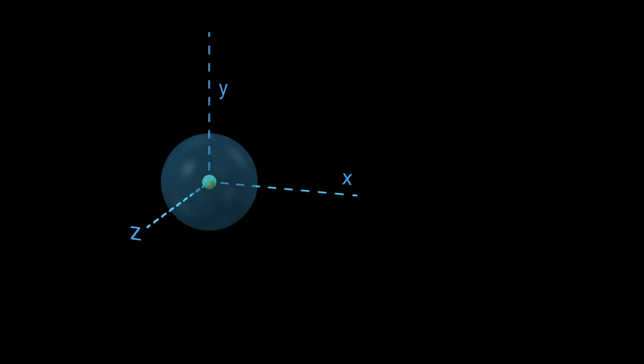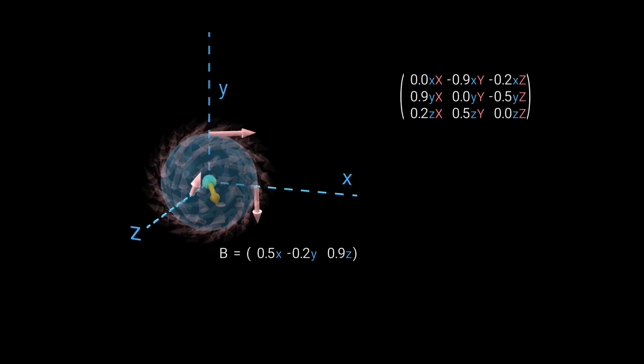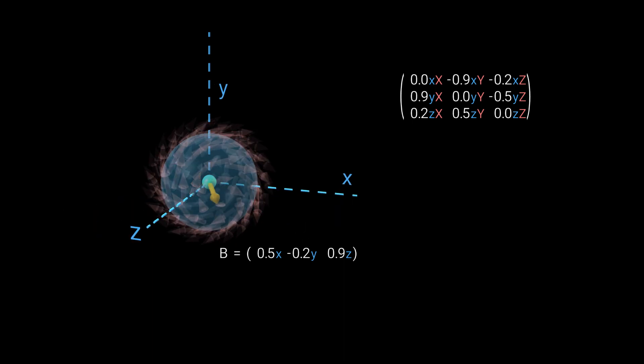Now let's try a magnetic field vector pointing in an arbitrary direction. Here's the tensor representing it. As before, the three rows of the matrix represent the three forces that lie on the axes. The first row is associated with a unit size velocity in the X-direction, or 1, 0, 0.